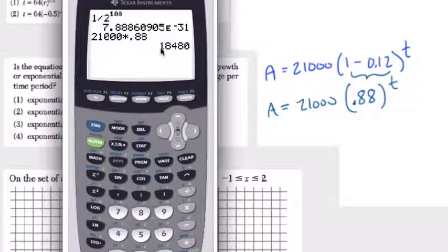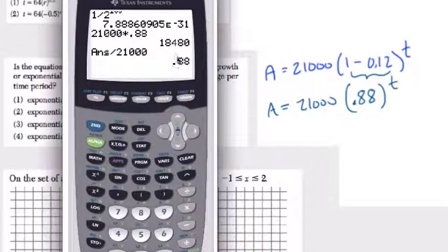Now, if we want to figure out what this is as a percent of the original, we can do that number, so hit second, answer, divided by 21,000. Of course, what is it? Well, it's 88% of the original.